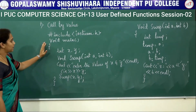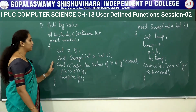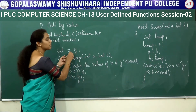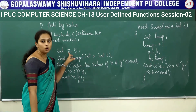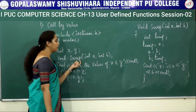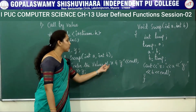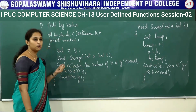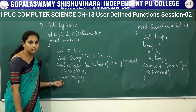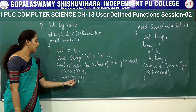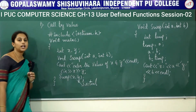This program is to swap two numbers. We include iostream.h, and inside void main, we declare the variables. These variables are called local variables as they can only be used within this function. Next, void swap(int a, int b) — this is the function declaration. We use cout to prompt the user to enter the values of x and y using standard input. After accepting the values, we are calling the function. The name of the function is swap — swap(x, y). These variables x and y are called actual parameters or actual arguments.